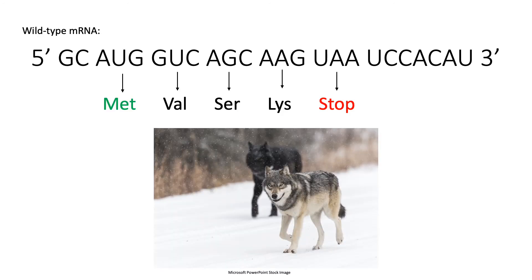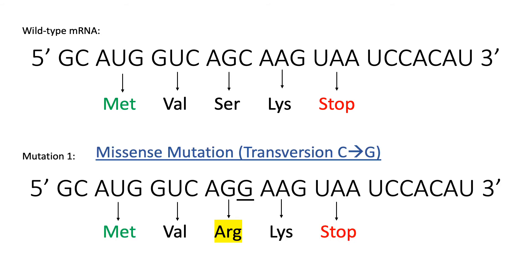Now that the student has discovered the wild type mRNA sequence of this species of wolves, he determines the different types of point mutations found in other wolves of this species. He determines the first mutation to be a missense mutation, since it causes a different amino acid to be encoded. This is classified as a transversion, since it goes from a pyrimidine to a purine — cytosine to guanine.